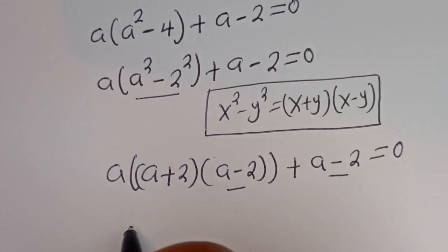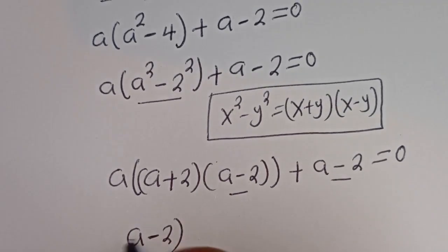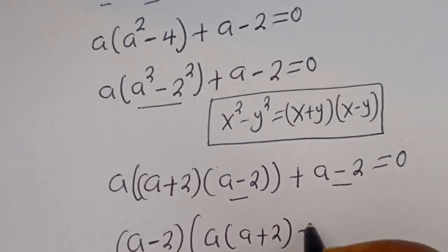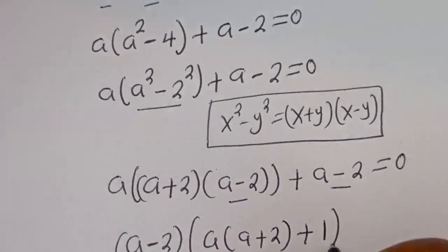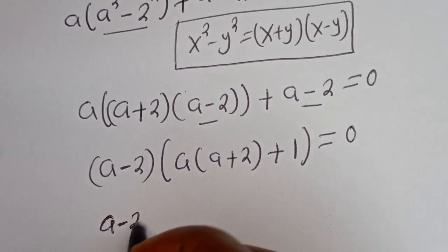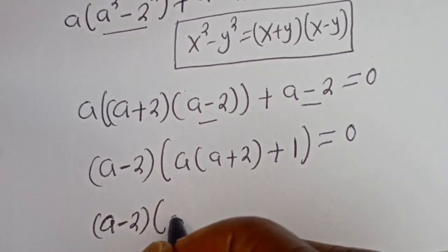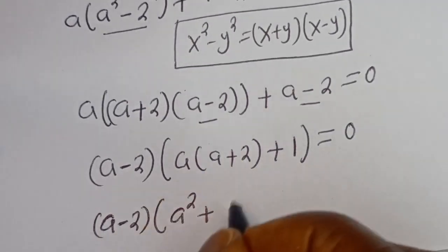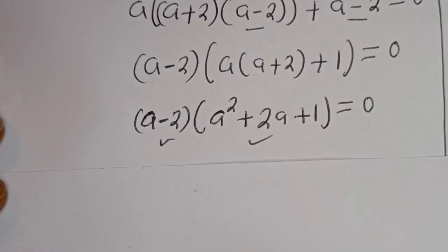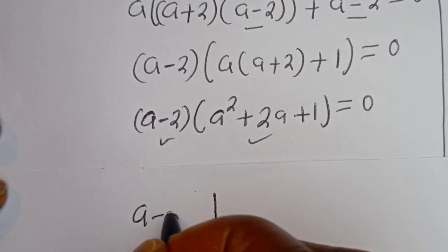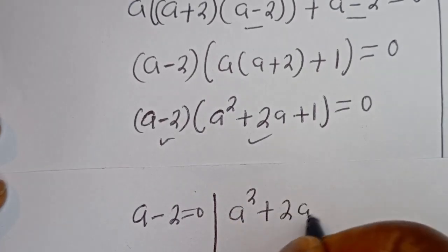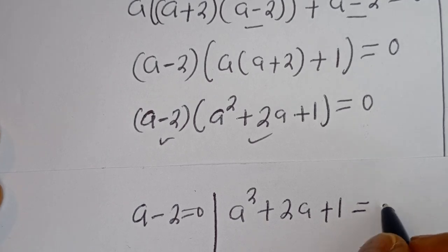Let's bring it out. We have (A minus 2) times (A times (A plus 2) plus 1) is equal to 0. There are two cases: the first case is A minus 2 is equal to 0, and the second case is A squared plus 2A plus 1 is equal to 0.